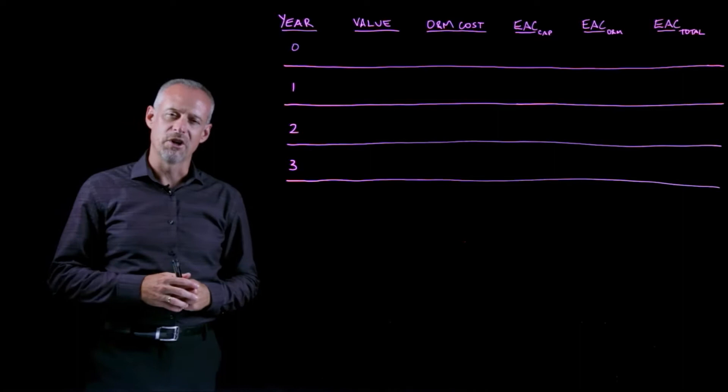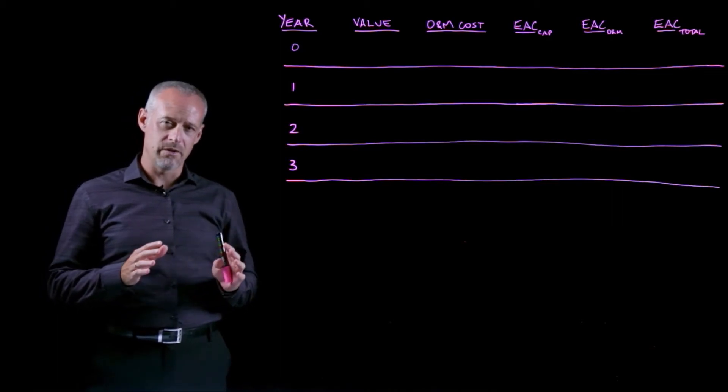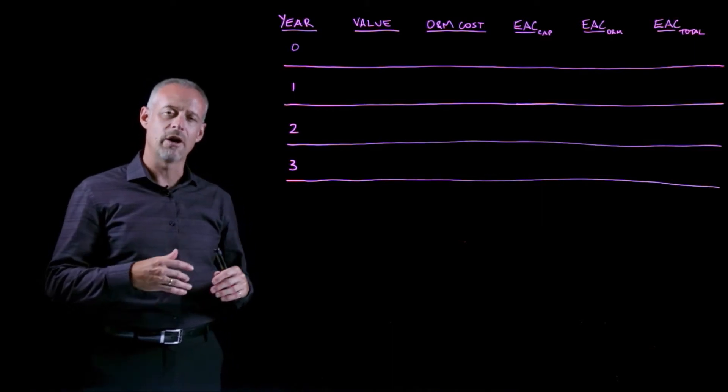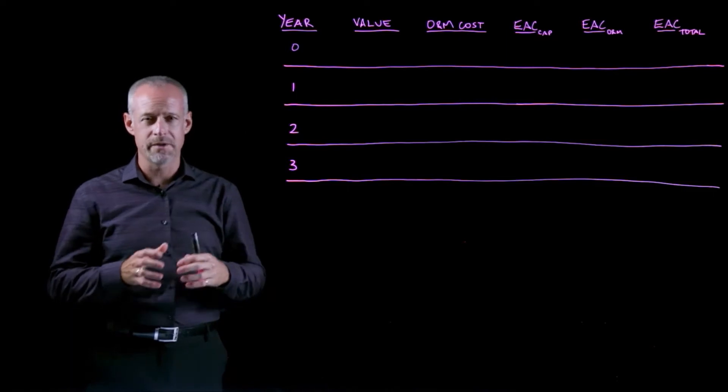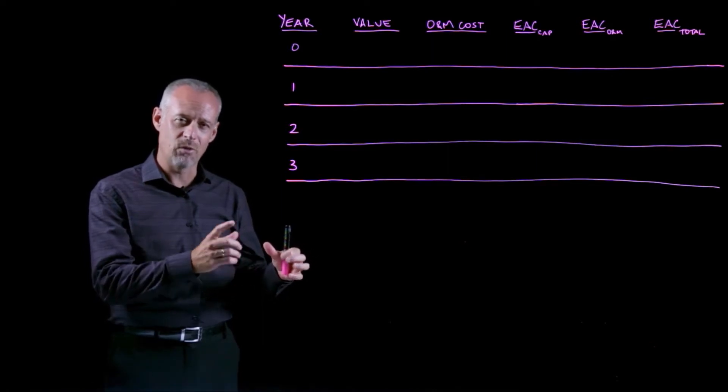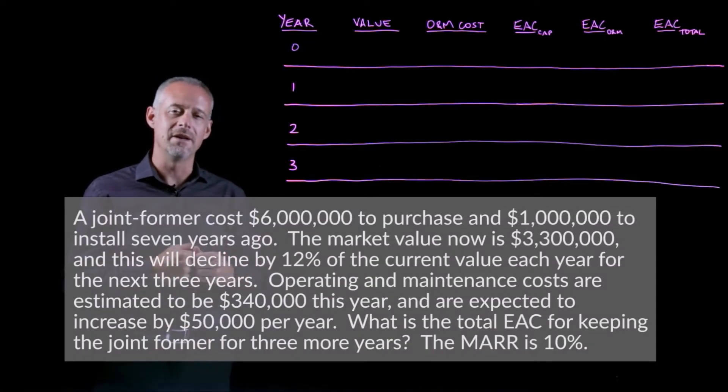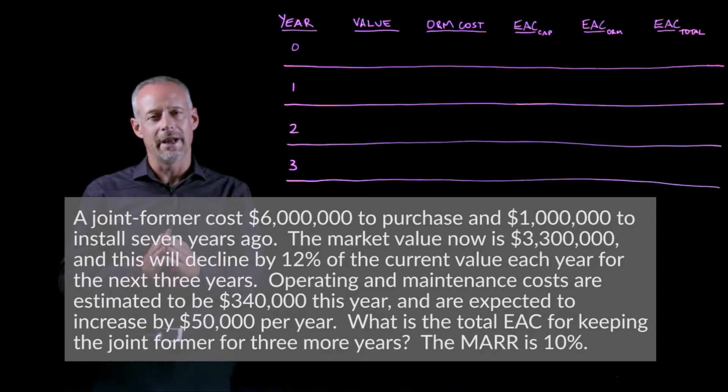In this problem, we learn of a company that purchased a piece of equipment called a joint former. The company bought the joint former several years ago for $6 million, and it cost $1 million to install. Usually we add the purchase price and installation and treat that as the total acquisition cost. However, it's kind of a trick question. This introduces the idea of sunk costs. Sunk costs are any costs that occur in the past.